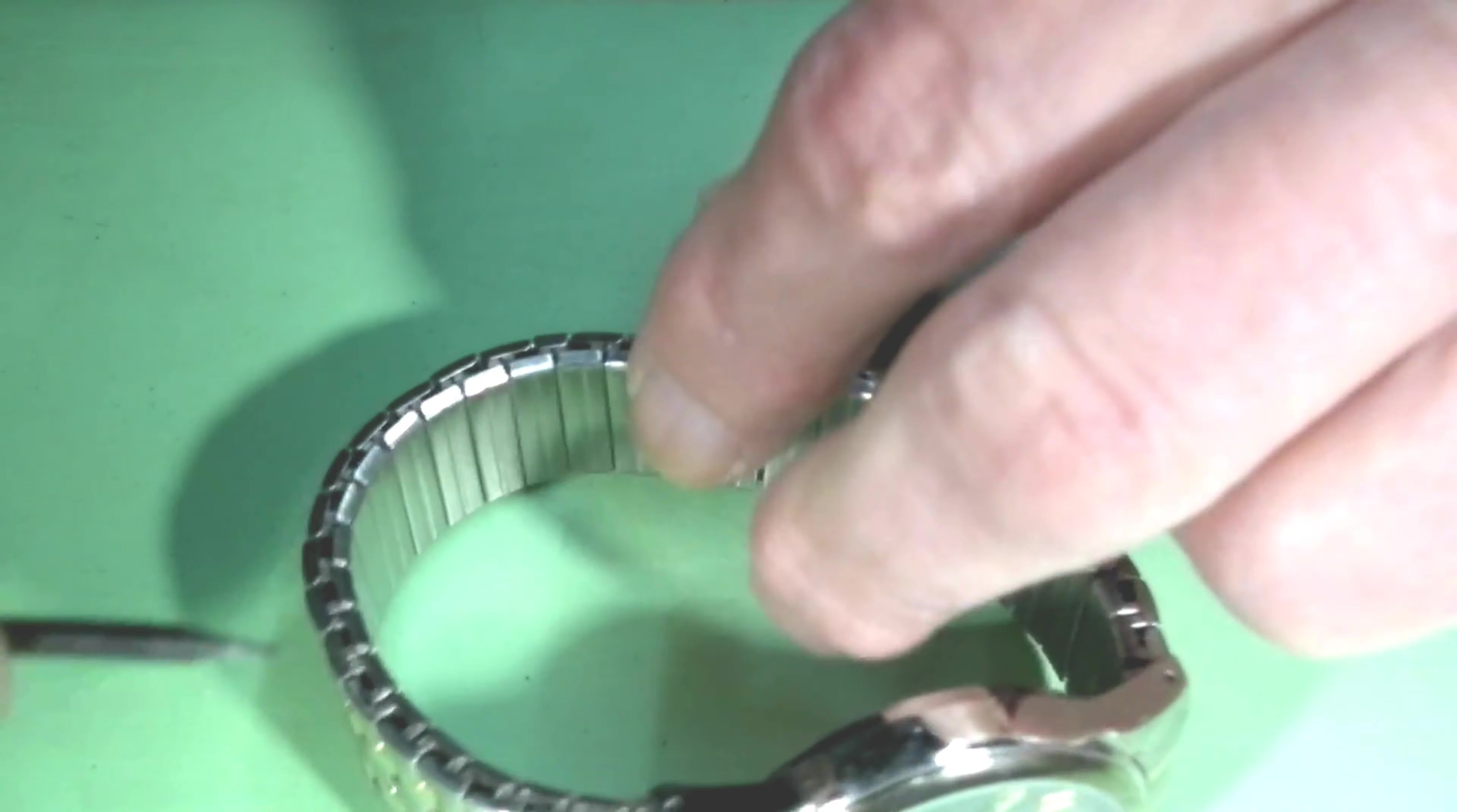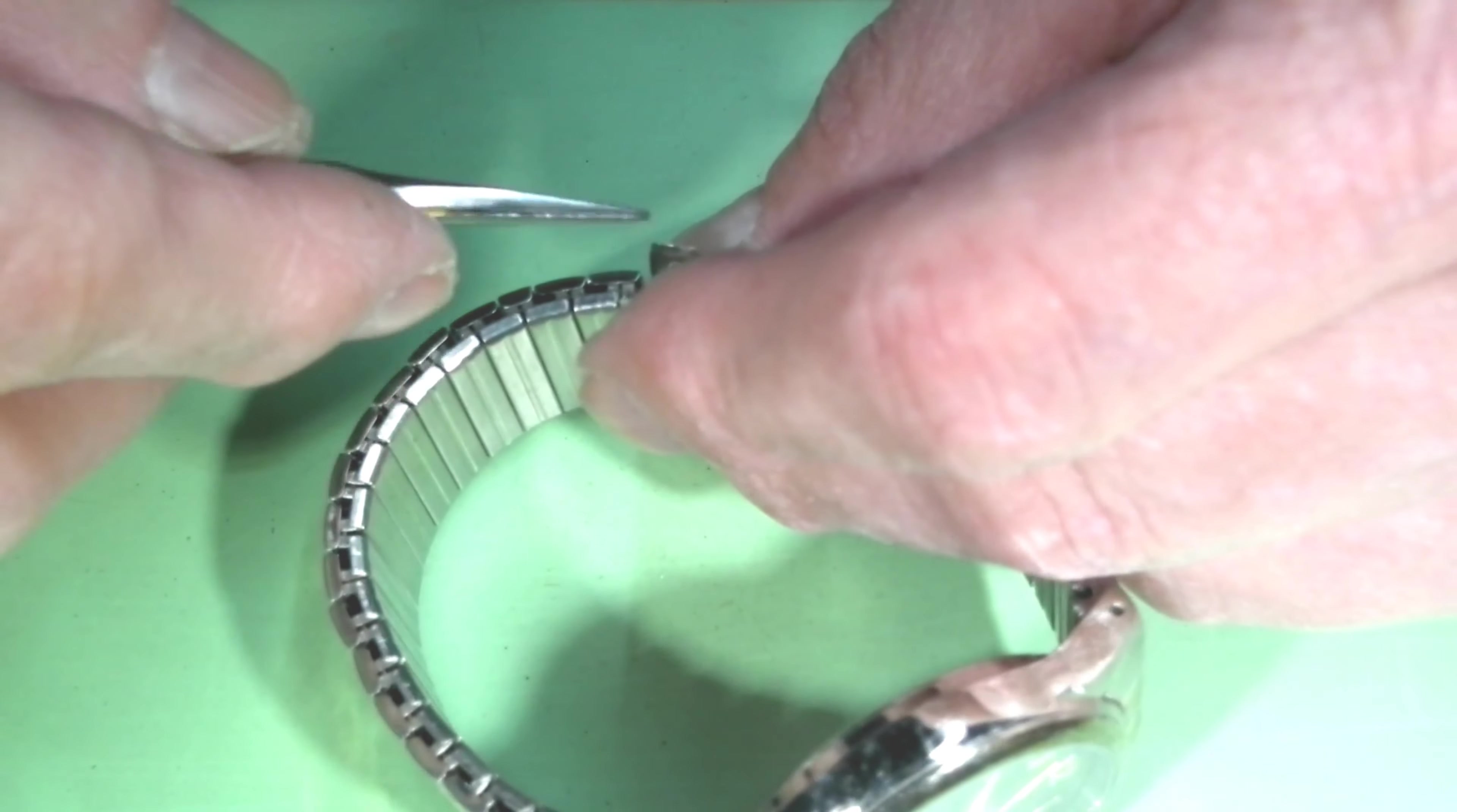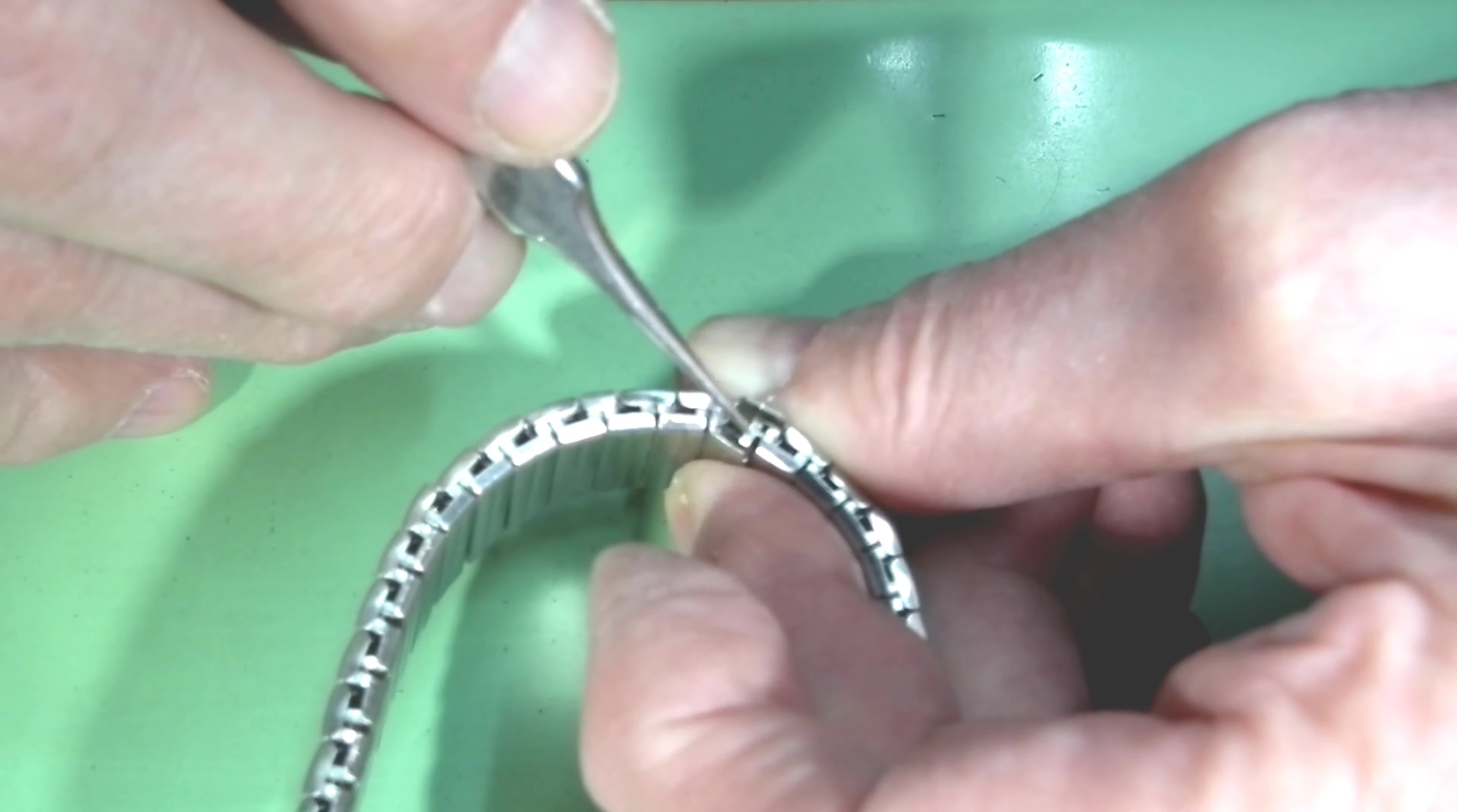I need to bend the tab as well to remove the hook on this side. Now I'm working on putting the links together by inserting the hooks.